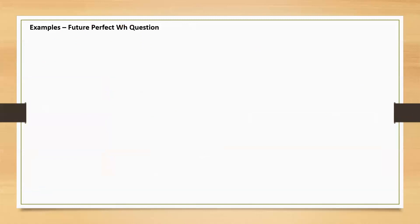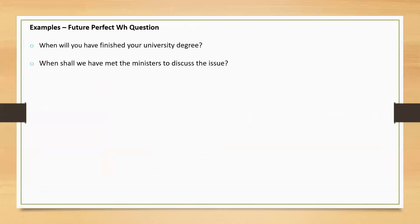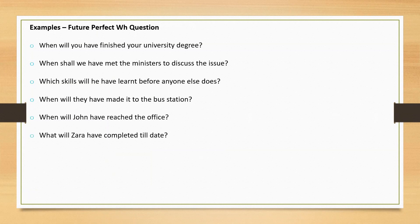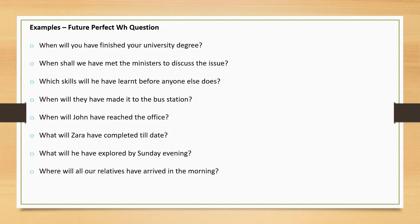Examples of future perfect WH question: 'When will you have finished your university degree?' 'When shall we have met the ministers to discuss the issue?' 'Which skills will he have learned before anyone else does?' 'When will they have made it to the bus station?' 'When will John have reached the office?' 'What will Zara have completed till date?' 'What will he have explored by Sunday evening?' 'Where will all our relatives have arrived in the morning?' 'When will our organization have grown?'